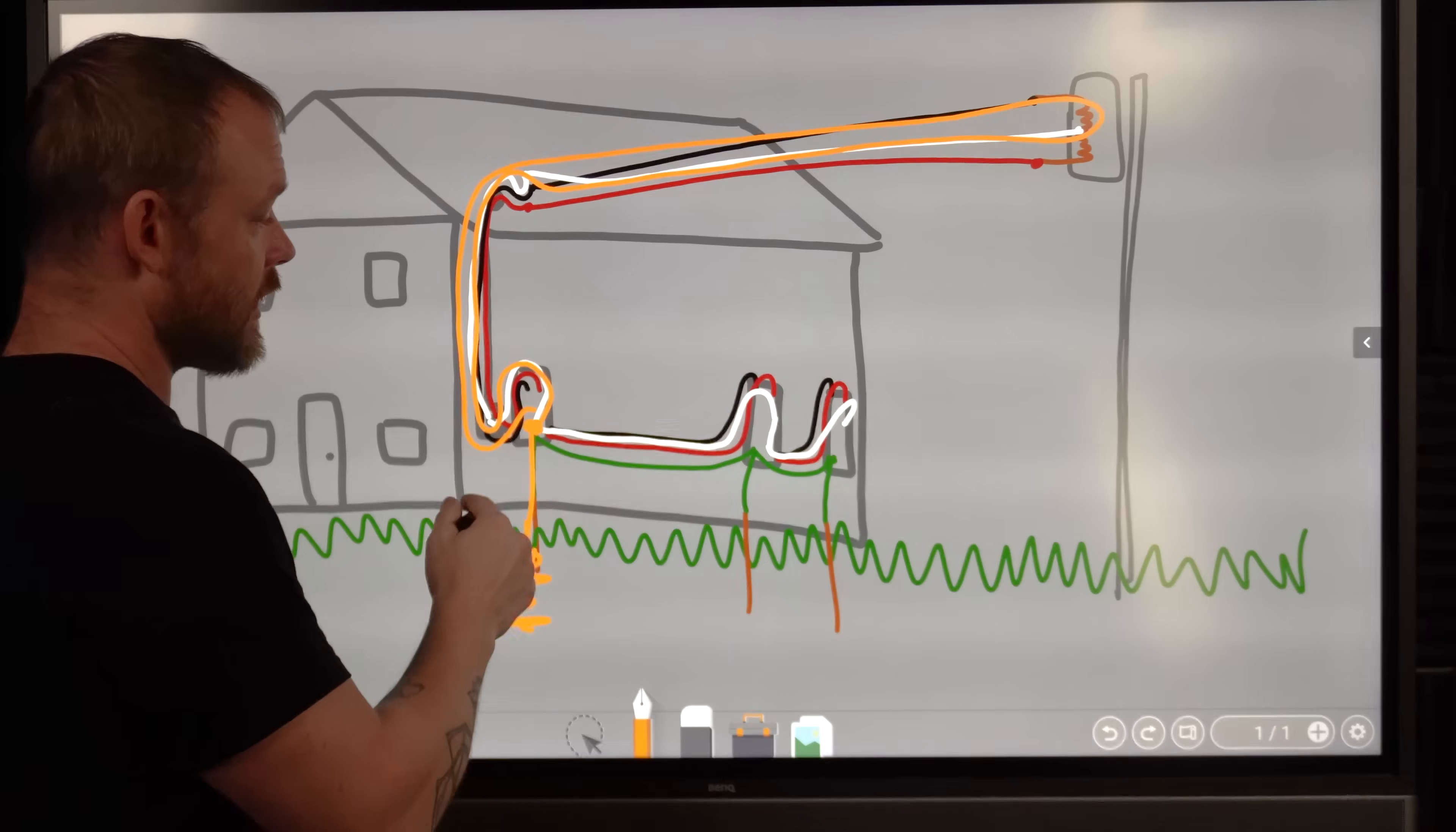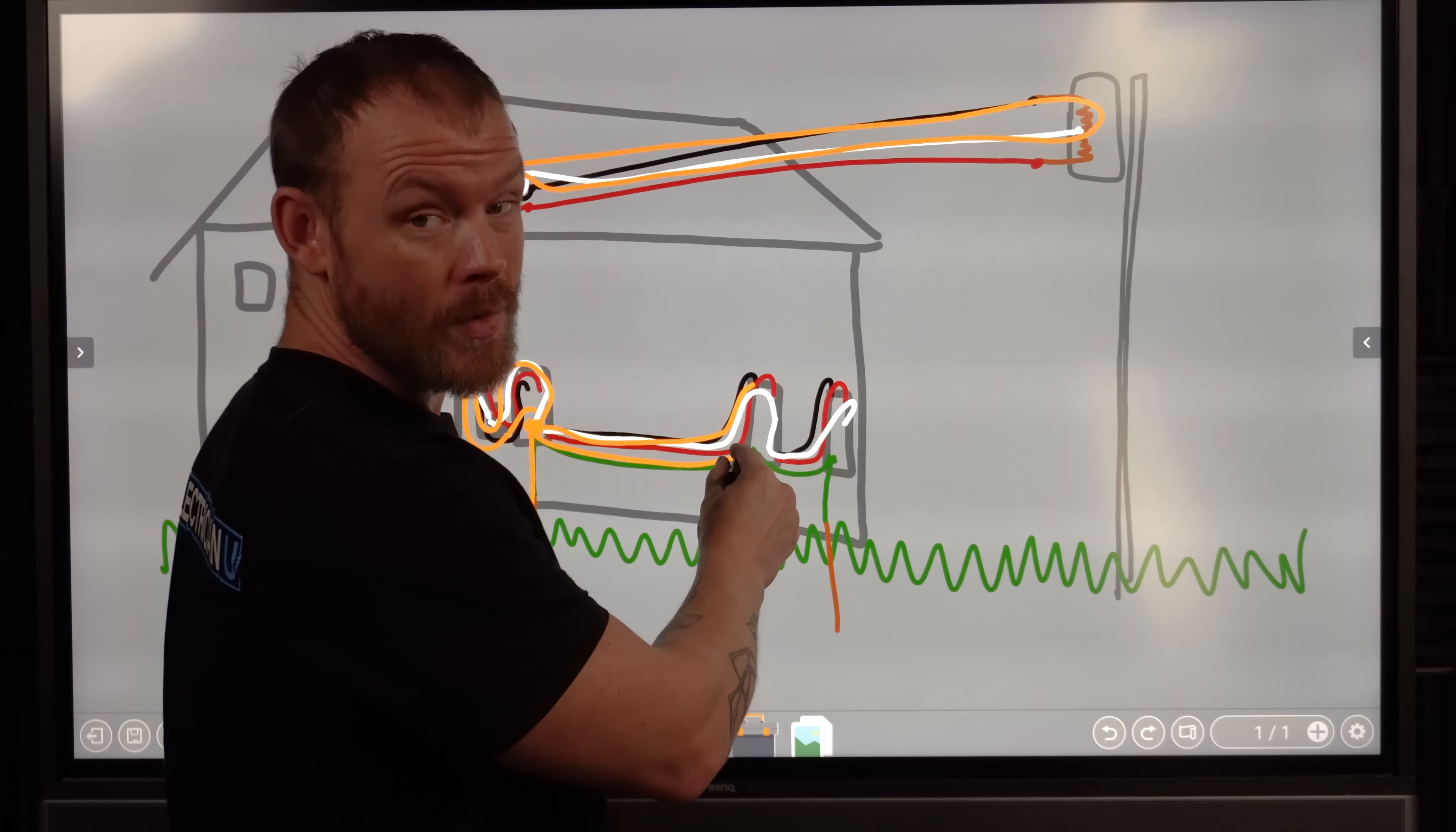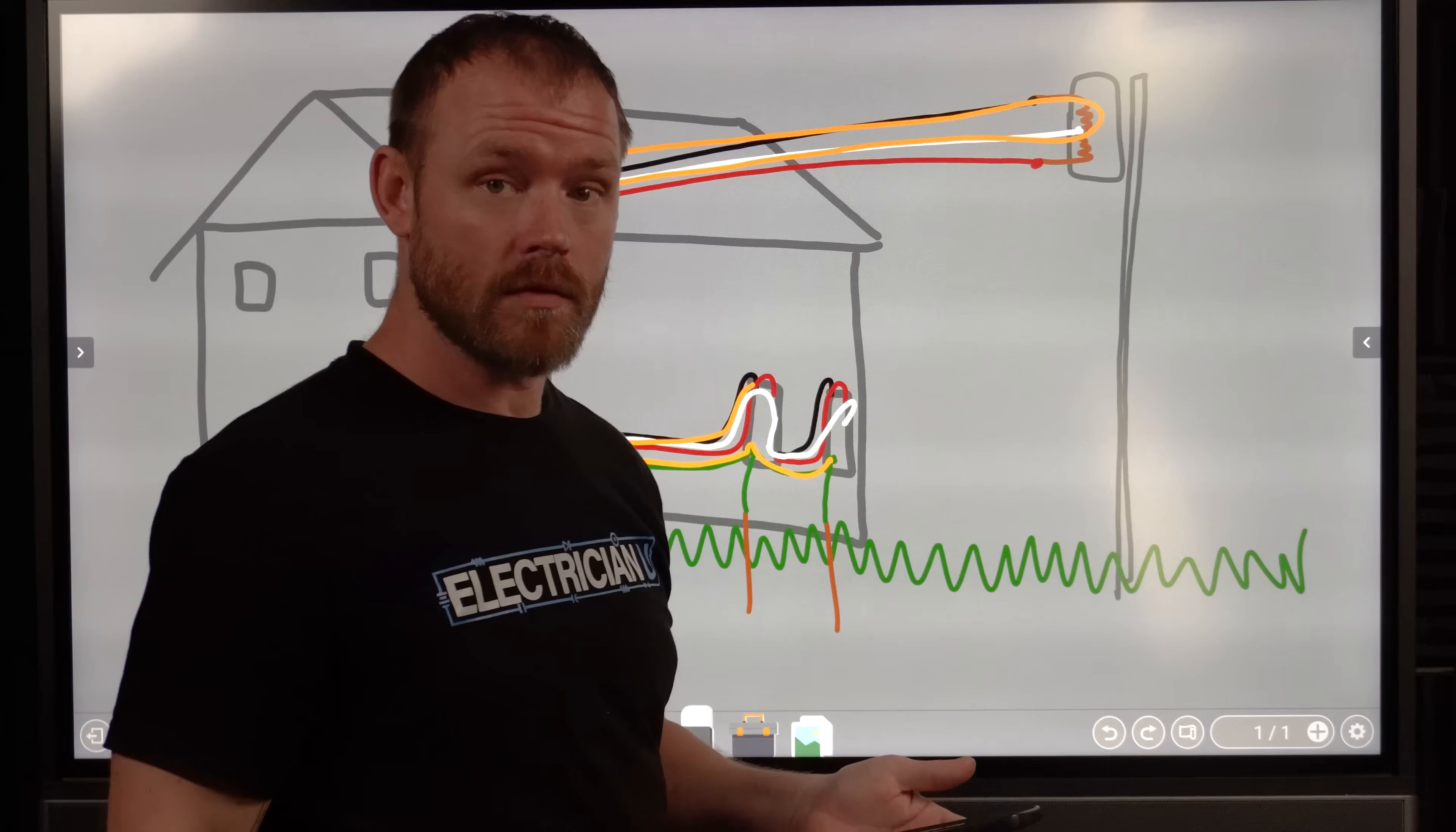But I was talking about how we have different sub-panels, right? You can run more circuits over and you just have to make sure you run an equipment grounding conductor, not a grounding electrode conductor, an equipment grounding conductor to each one of the panels. But he was asking, what about having a separate ground rod for each panel? Can you do that?